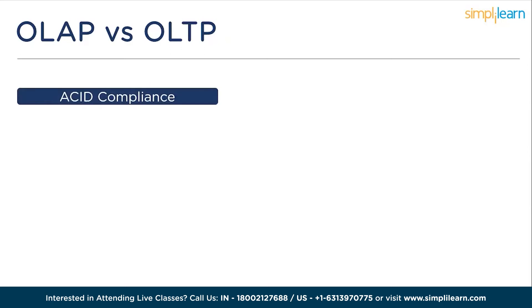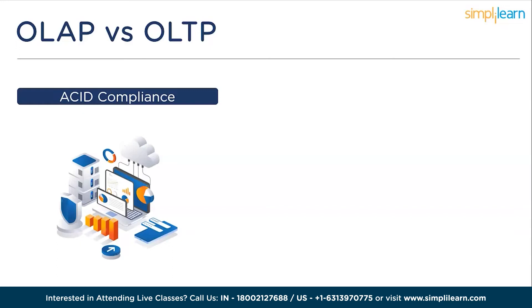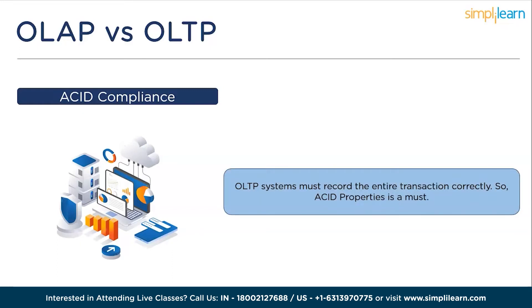The main characteristics of the OLTP platform include the following. The first one is ACID properties. OLTP systems must record the entire transaction correctly. A transaction is an execution of a program that may require multiple steps or operations, and it is complete when all parties acknowledge the transaction, when the product or service is delivered, or when certain updates are made to specific tables in a database. If there is any error in any step, the entire transaction must be aborted and all steps deleted. Thus, OLTP systems must comply with Atomic, Consistent, Isolated, and Durable — ACID — properties to ensure data accuracy.